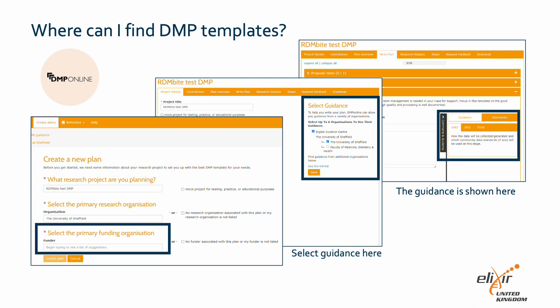So where can you find DMP templates? These three commonly used tools all include some functionality for DMP templates, so this is a good place to start. In DMP Online, when you create a plan from scratch, you have the option of selecting your funder, highlighted by a box on the left screenshot. Your plan will now automatically follow the selected funder's template. After you click create plan, you can select multiple sources of guidance to show in the sidebar. For example, you could also choose to show your institution's guidance, highlighted on the centre screenshot.